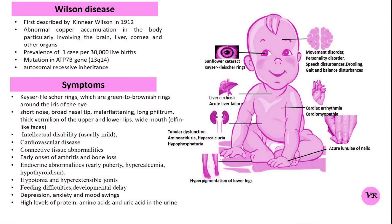The disease is caused by mutations in the ATP7B gene, which encodes a copper-transporting enzyme essential for the proper handling of copper in the body. The defective enzyme leads to impaired copper excretion into bile and subsequently accumulation in the tissues.